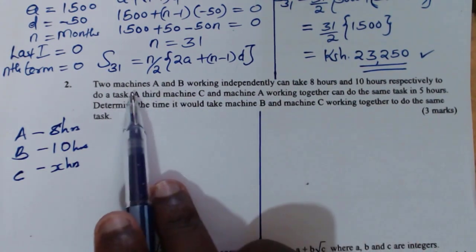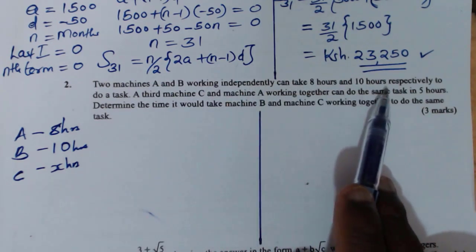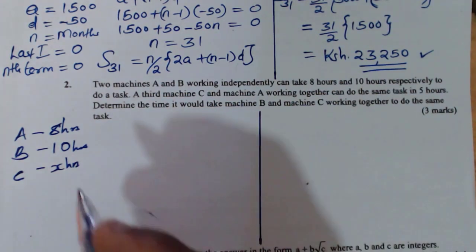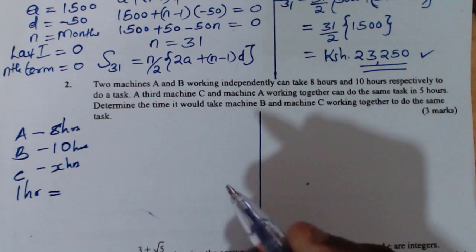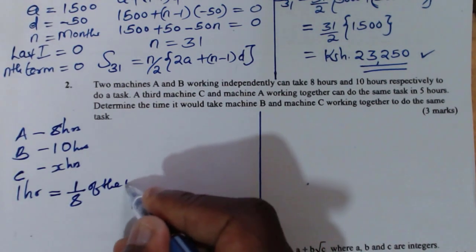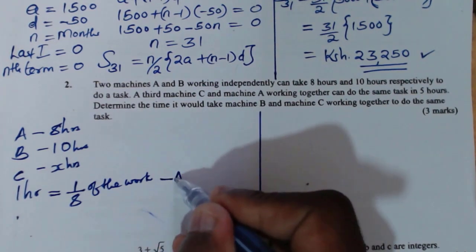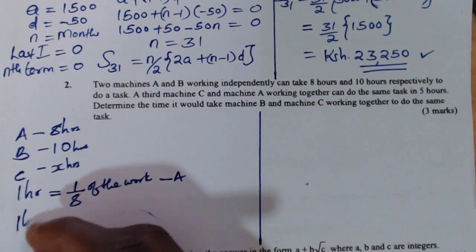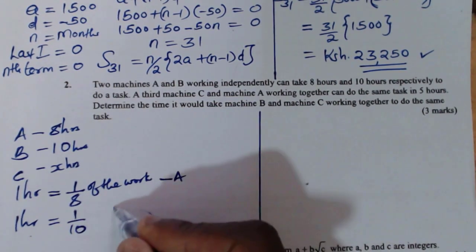We can first work the first statement. Two machines A and B working independently can take eight hours and ten hours to do the task. We need to ask ourselves: what about in one hour? In one hour, machine A will do one over eight of the work. For machine B, in one hour it will do one over ten of the work.